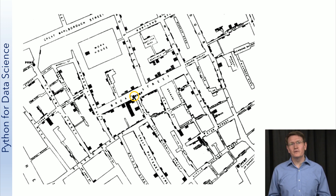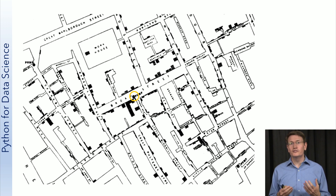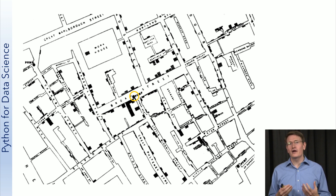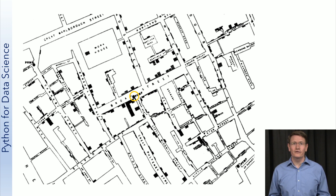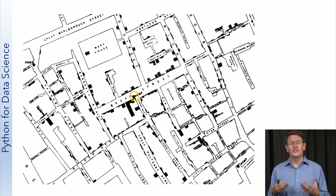One key piece of this puzzle was provided later by a reverend in the area named Henry Whitehead. He had sought out to prove John Snow wrong, but in the process stumbled on the answer to the mystery of how the pump got contaminated. A baby had become ill from cholera in a house near the pump shortly before the outbreak. The parents had cleaned the baby's diapers into a cesspool near the well, which then seeped into the well and contaminated it.